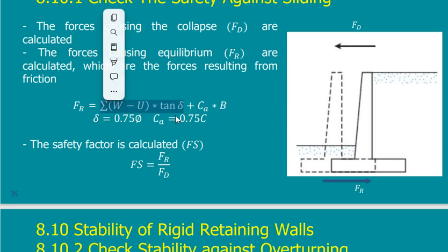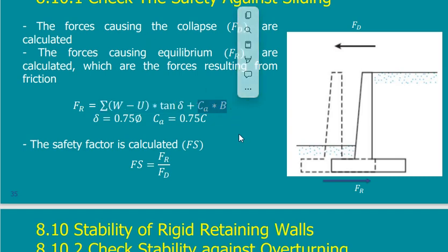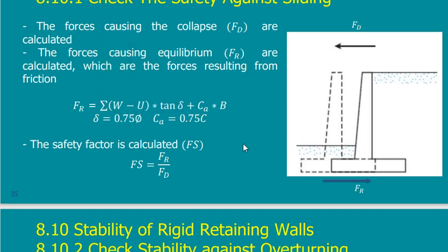For C-phi soil, the effect of C is added directly: C multiplied by B, where B is the width of the footing. So the full resisting term is the effect of C plus the effect of phi. Sometimes we use C_A which equals 0.75·C instead of the full C value, depending on the problem.